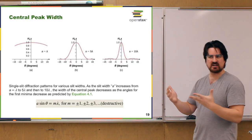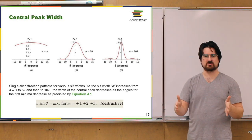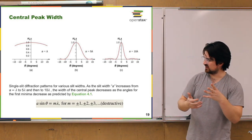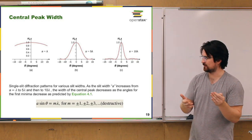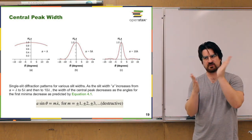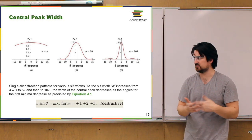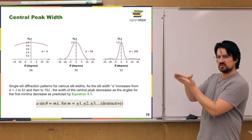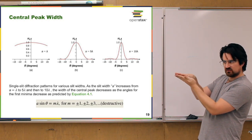Thinking about the central maximum: it's bounded by those first minima, where the light dies off entirely just around that central peak. The destructive condition tells us that if you change the slit width, then sine of theta also has to change. If the slit width 'a' is getting larger, then sine of theta has to get smaller, and since theta is only between zero and 90 degrees, sine of theta getting smaller means theta gets smaller. So when the slit width gets larger, the central peak gets narrower.